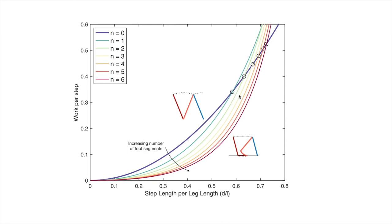Below that intersection point at lower step lengths, plantigrady wins, and above that point, compass gate wins. You can also see that at any given step length below the intersection, increasing the number of segments reduces the amount of work done.